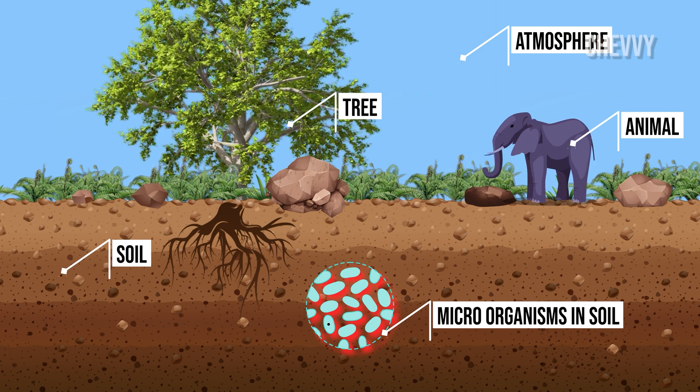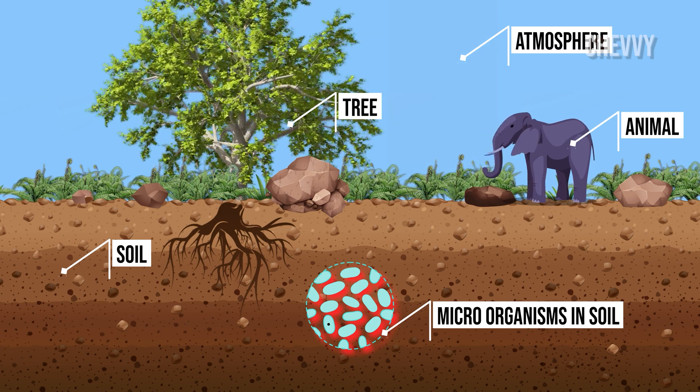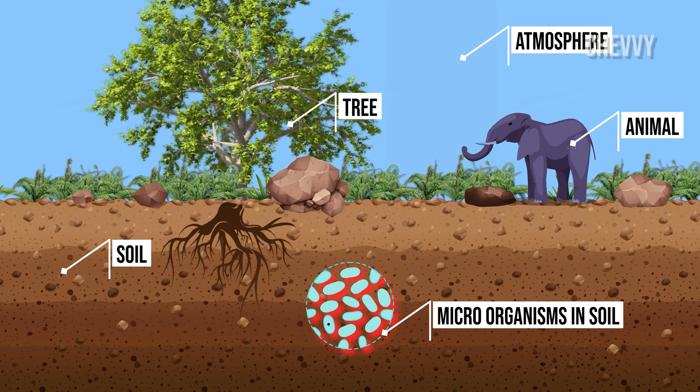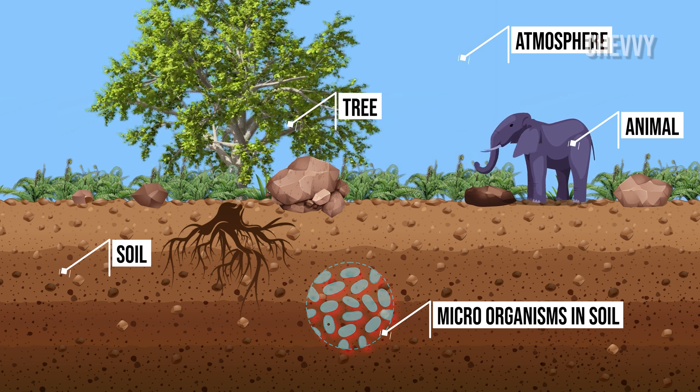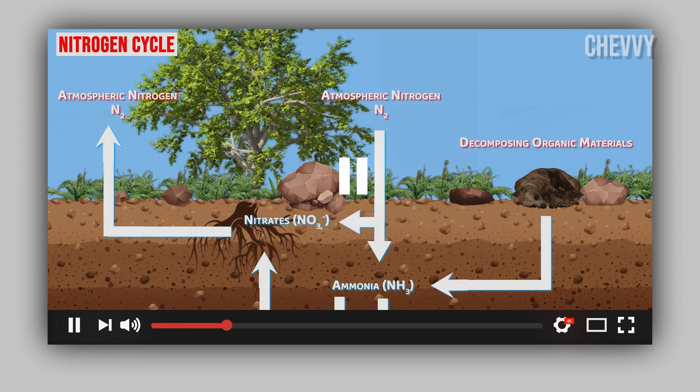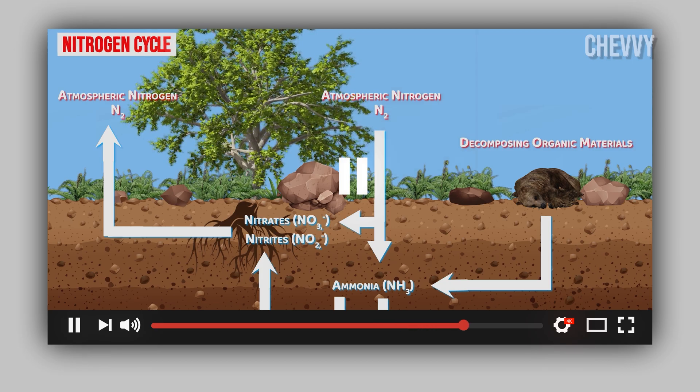In each cycle, organisms and the environment, which includes the atmosphere, soil, and ocean, modify and cycle the chemical element or molecule. The nitrogen cycle is one of these cycles, which we looked at in the last video. Please watch the video if you want to learn more.